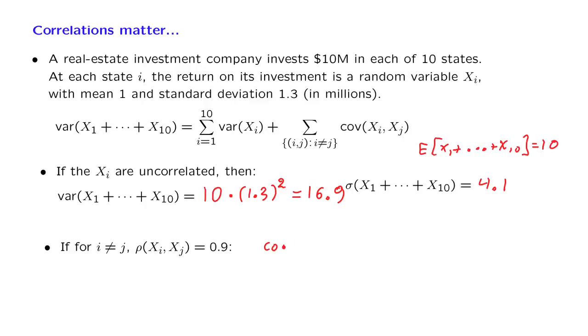So in this case, the covariance of Xi with Xj is going to be the correlation coefficient times the standard deviation of Xi, times the standard deviation of Xj, which is 0.9, times 1.3, times 1.3. And so the covariance turns out to be 1.52.